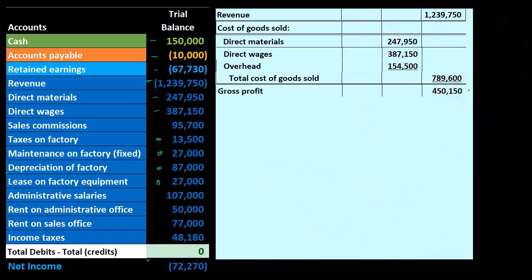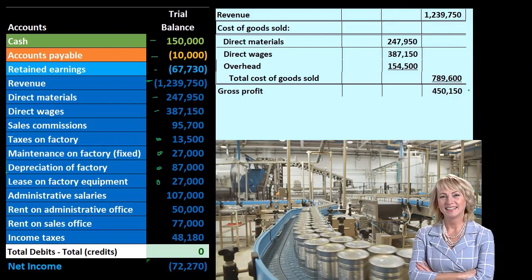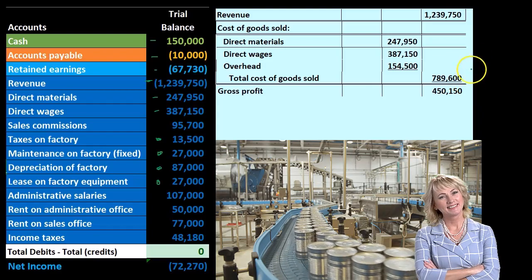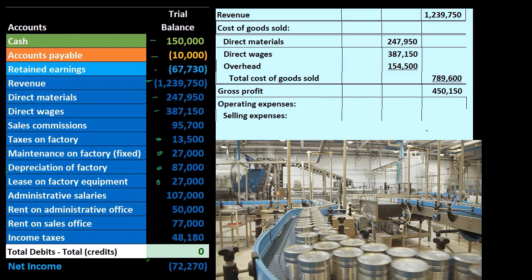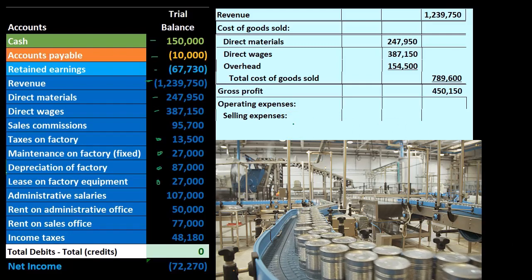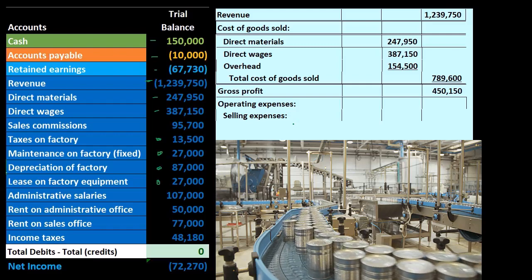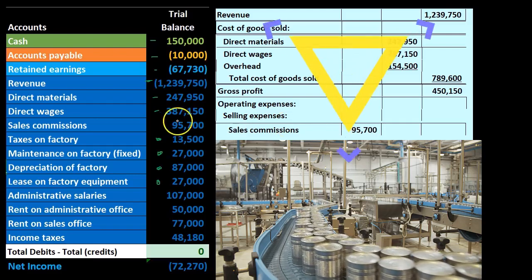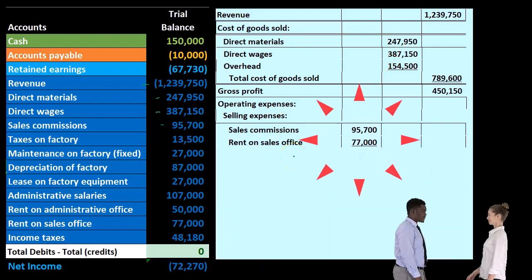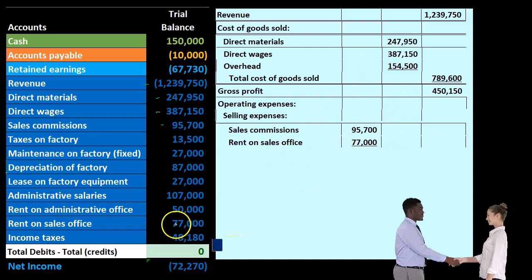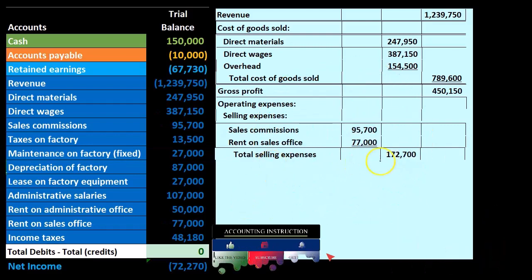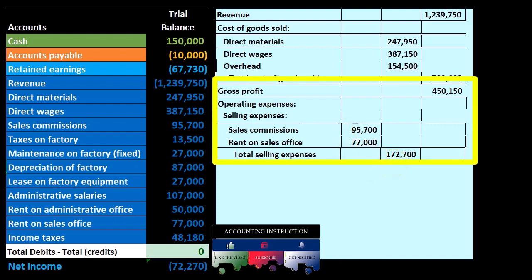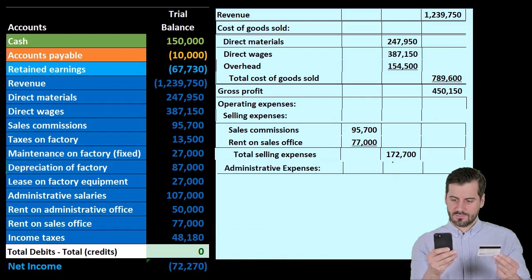The total cost of goods sold gives us the gross profit — now we're in the outer column. Revenue minus total cost of goods sold gives us that gross profit, which is a very important number for manufacturing companies because we want to know the relationship of inventory costs to revenue. Then we take out the operating expenses, which includes selling expenses and administrative expenses. Sales commissions are 95,700 and rent on the sales office is 77,000, giving total selling expenses of 172,700.